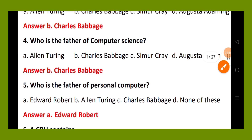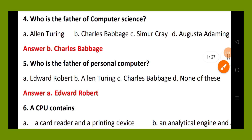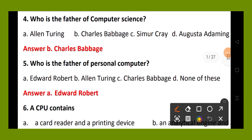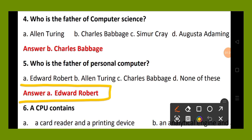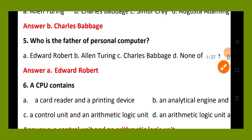Question number 5. Who is the father of personal computer? Option A, Edward Robert; option B, Alan Turing; option C, Charles Babbage; option D, none of these. The right answer is option A, Edward Robert. Who is the father of personal computer?